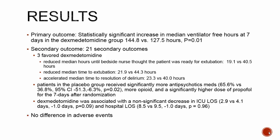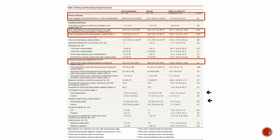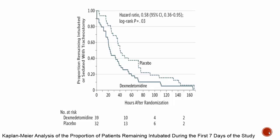The Precedex group had a non-significant decrease in ICU length of stay and hospital length of stay, each by approximately one day. There were no significant differences in adverse events. The Kaplan-Meier curve shows the proportion of patients remaining intubated during the first seven days — the Precedex group dropped off more quickly than the placebo group following initiation of the study drug.